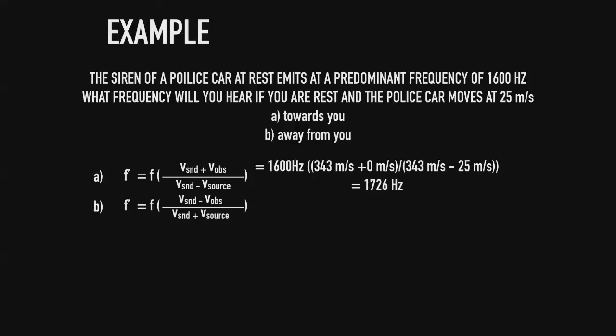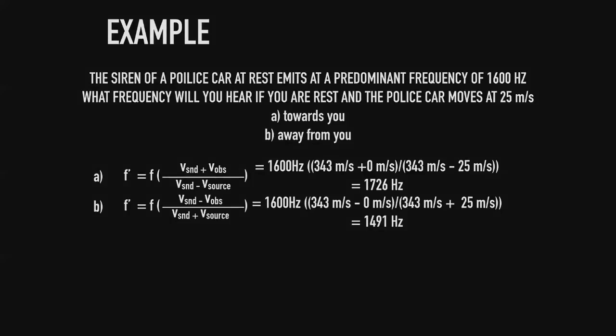For Part B, we apply the receding formula, noting that the signs change because the police car is now moving away from us. Plugging in the values again, the perceived frequency when the cop car is moving away is 1491 Hz. Again, since we are at rest, the velocity of the observer is zero meters per second.